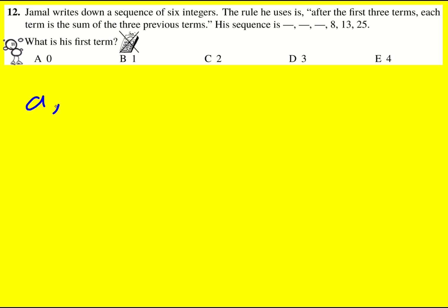When I did this question, I immediately wrote down the sequence a, b, c, and then the numbers that we know: 8, 13, and 25.